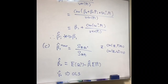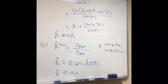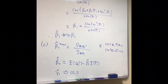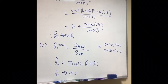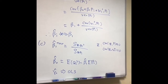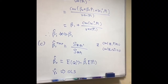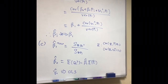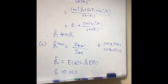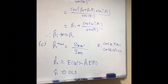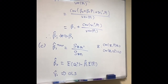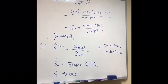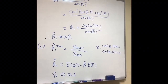In part B, you have to show that beta_1_hat is inconsistent. Inconsistent means that the estimator beta_1_hat does not converge to beta_1 when n becomes large. To show this, you apply the beta_1_hat formula, which is the covariance divided by the variance.